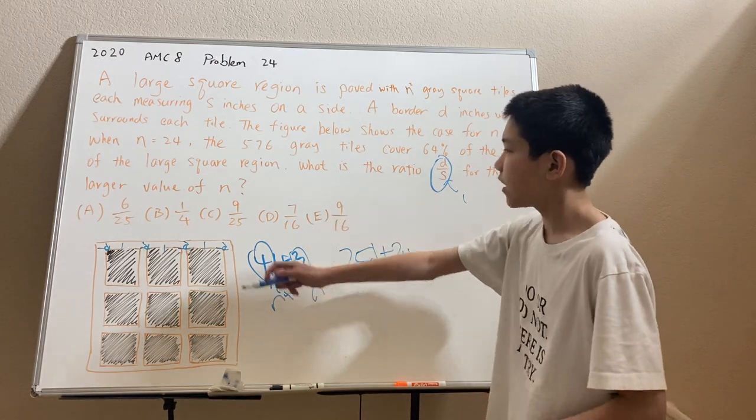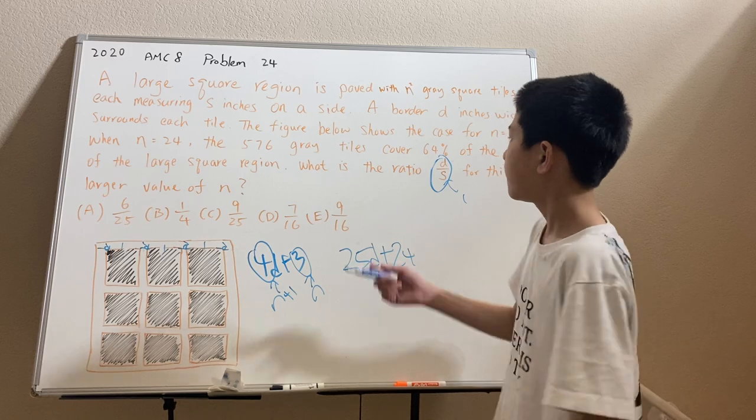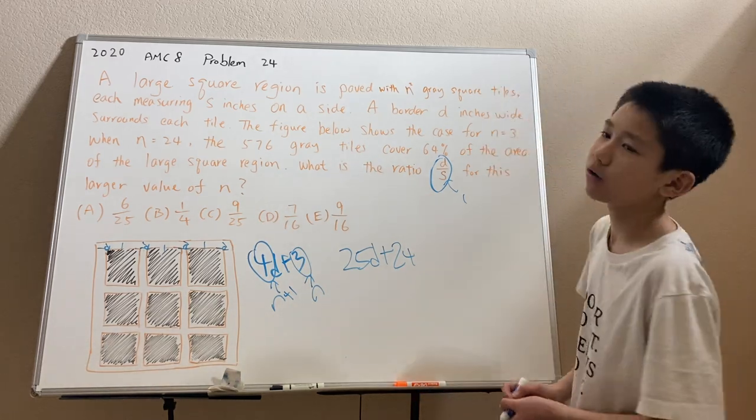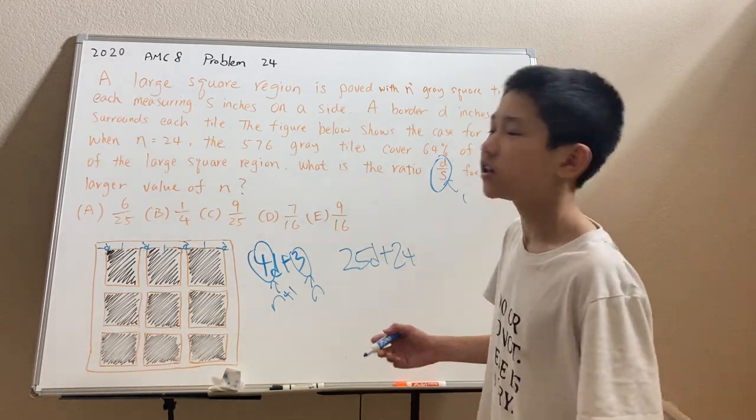Because now it's very easy to find that each square is 1 times 1, or just 1, and 576 of them, that's the total area of 576. It's a very clean number.